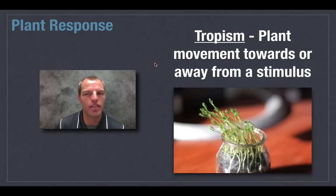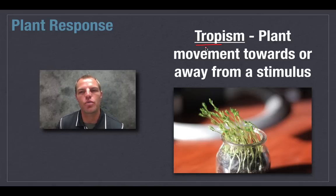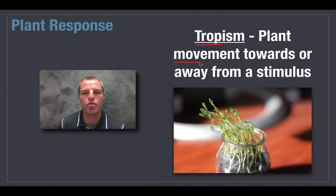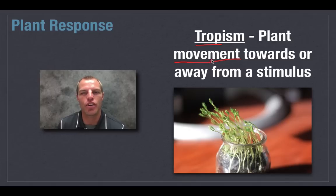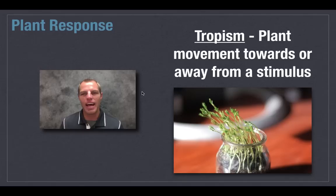To understand this definition a little better, let's look at the word itself. The first part, 'trope,' comes from the Greek word 'tropos,' which means 'turn to.' So we can substitute 'movement' with 'turn' — plants turn towards or away from a stimulus.